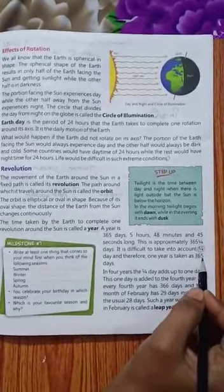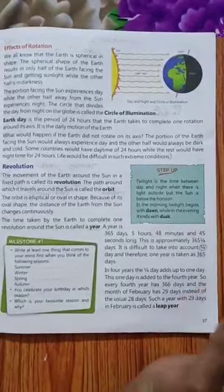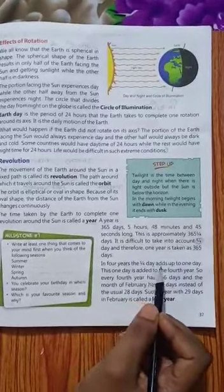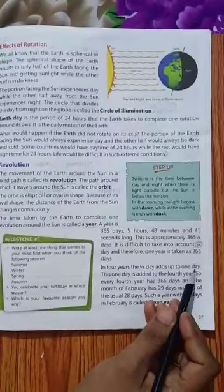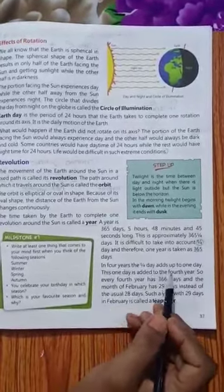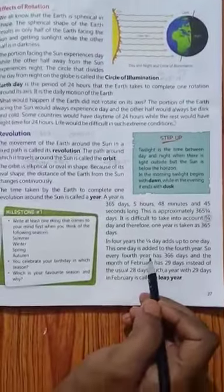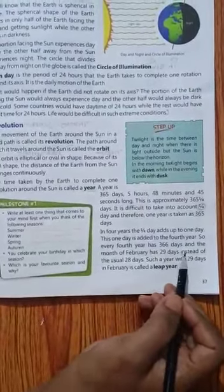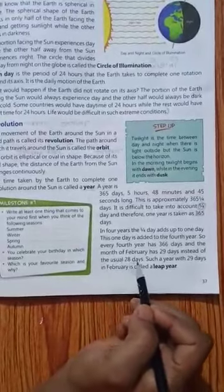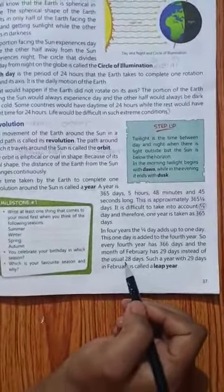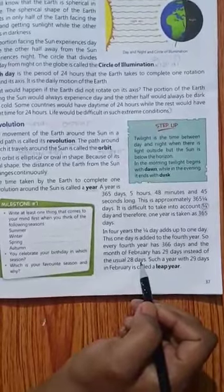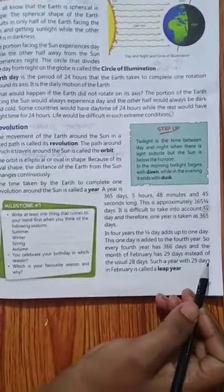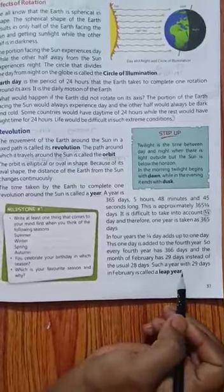Kyunki usmein 366 days ho jate hai. Kyunki usmein February ke month mein ek din badh jata hai. See here, in four years, the one upon four days add up to one day. This one day is added to the fourth year. So every fourth year has 366 days and the month of February has 29 days instead of the usual 28 days. Usually 28 days hota hai Feb mein, lekin har fourth year mein Feb mein 29 days ho jata hai, aur wo year leap year hota hai. Such a year with 29 days in February is called a leap year.